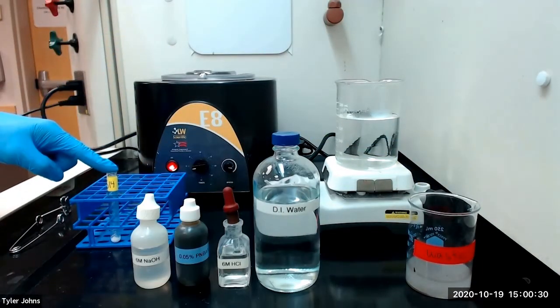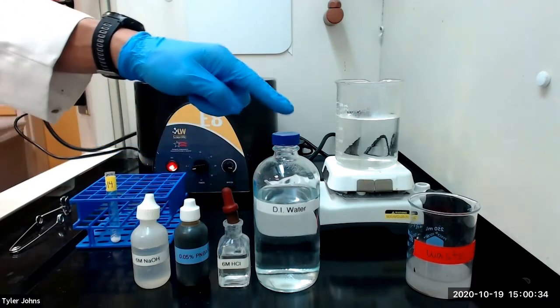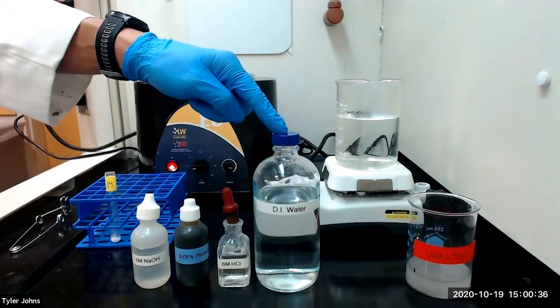We will next dissolve our precipitate by adding several drops of 6 molar hydrochloric acid and 1 milliliter of deionized water.